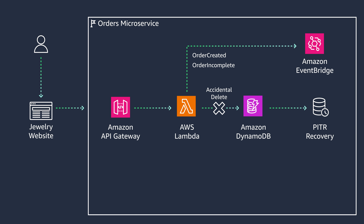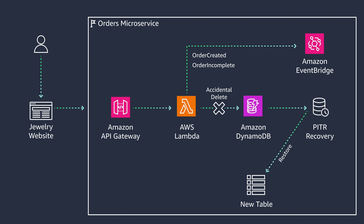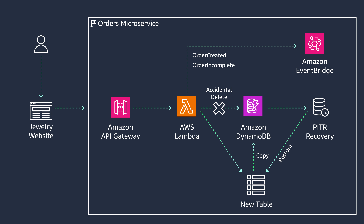DynamoDB has a point-in-time recovery feature which, once enabled, provides continuous backups of your DynamoDB data for up to 35 days with per-second granularity. You simply point your microservice to this new table, or copy the deleted data from the new table back to your original table.